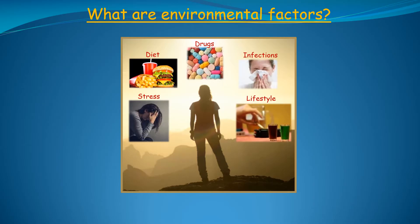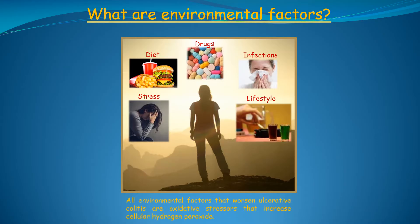But how do environmental factors cause relapse? Since we already know that hydrogen peroxide has a causal role in the development of ulcerative colitis, it follows that environmental factors are exposures that increase cellular hydrogen peroxide. And since hydrogen peroxide is an oxidant, we can define environmental factors that exacerbate ulcerative colitis as oxidative stressors whose mechanism is to increase cellular hydrogen peroxide. In other words, all environmental factors that worsen ulcerative colitis are oxidative stressors that increase cellular hydrogen peroxide.